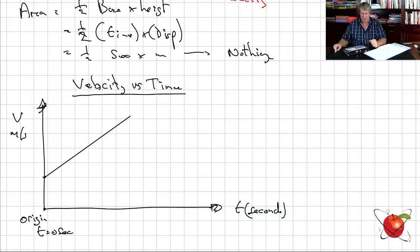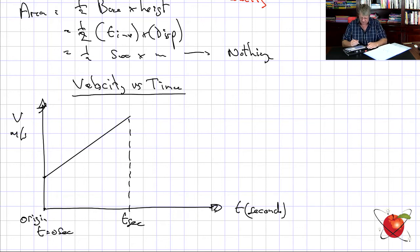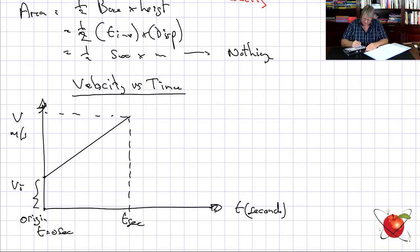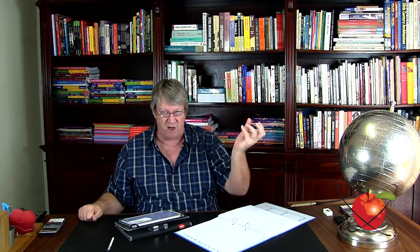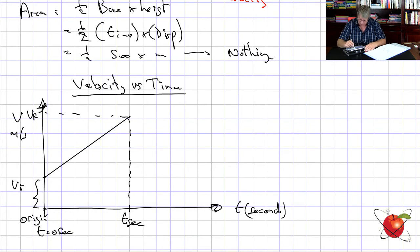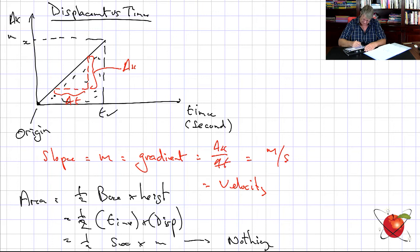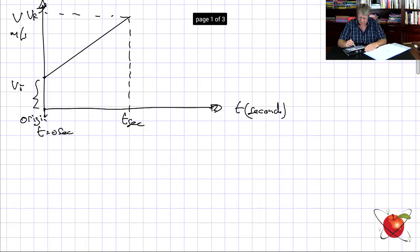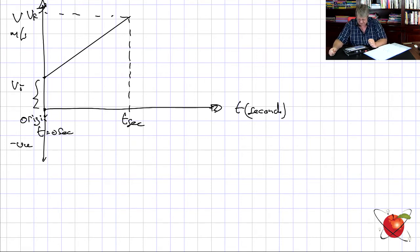This is t equals zero seconds — when we press the stopwatch. The object had a v-initial here, and this number up here is v-final. It had an initial velocity already, meaning as it went past me it was already moving. Bear in mind these graphs can show negative velocity as well, meaning the object is moving in the opposite direction.